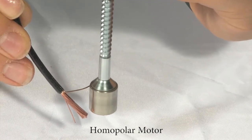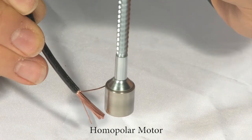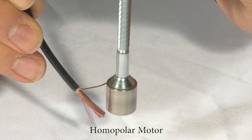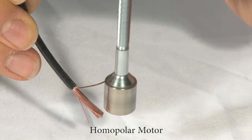Instantly, you've created a homopolar motor. Just out of a wire, a battery, a magnet, and a screw.